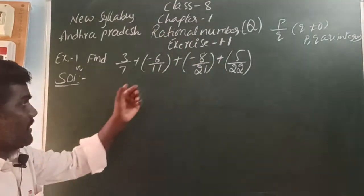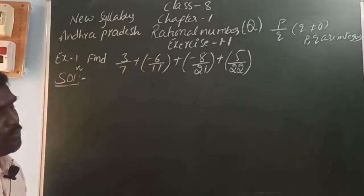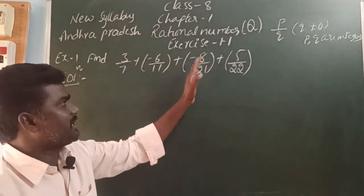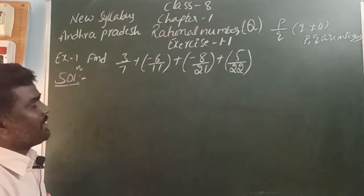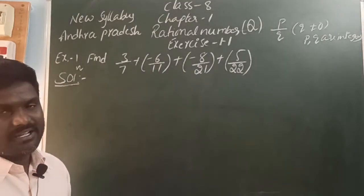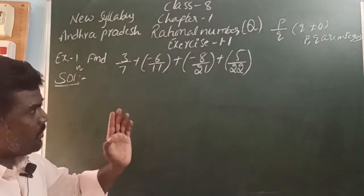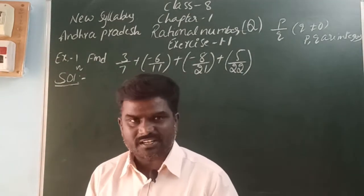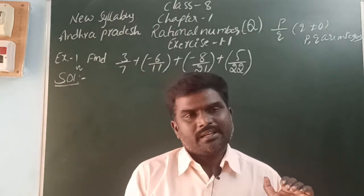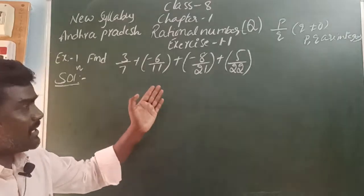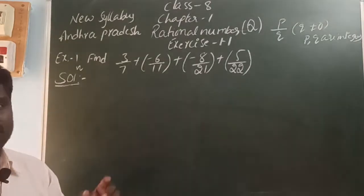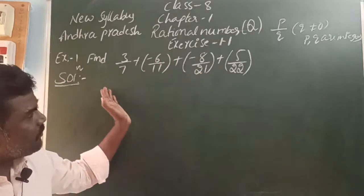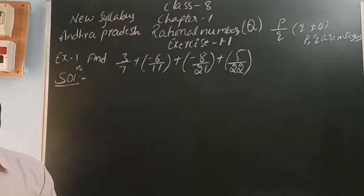Before we go to Exercise 1.1, Example 1: find 3/7 + (-6/11) + (-8/21) + 5/22. Here, how can we do that? There are two methods. In seventh class you already know the simplification of fractions — addition or subtraction of two or more fractions — either by cross multiplication or by taking the LCM. Here, how many fractions are there? Four fractions. So we take the LCM of the four denominators and then simplify.